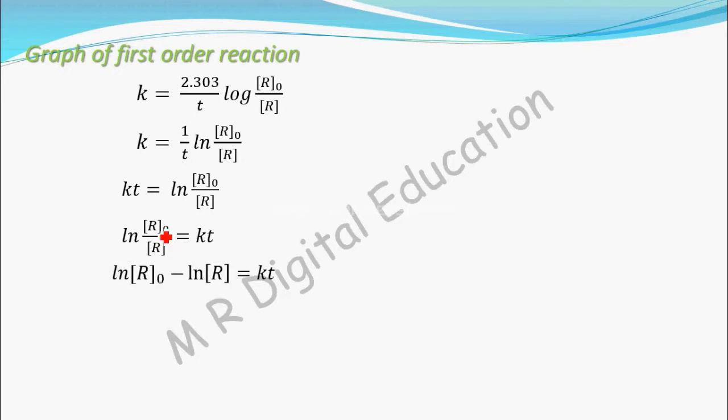See, ln [R]0 by [R] we can write it as ln [R]0 minus ln [R], because log of m by n equals log m minus log n. So that equals kt.